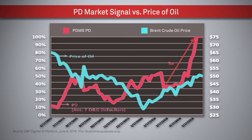We see that between June 2015 and January 2016, the price of oil dropped by half, while the average probability of default increased by a factor of five. Since then, oil experienced a moderate rebound, trading at around 50 US dollars a barrel in early June.